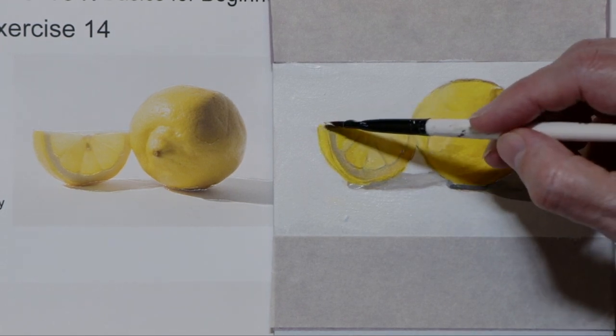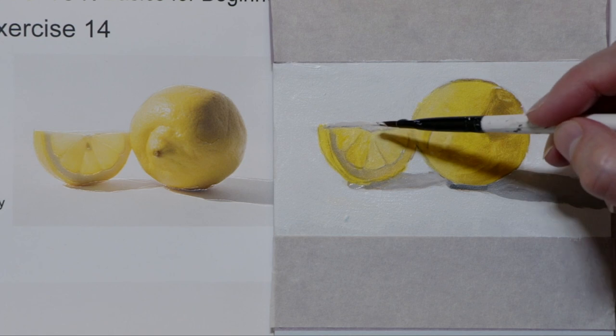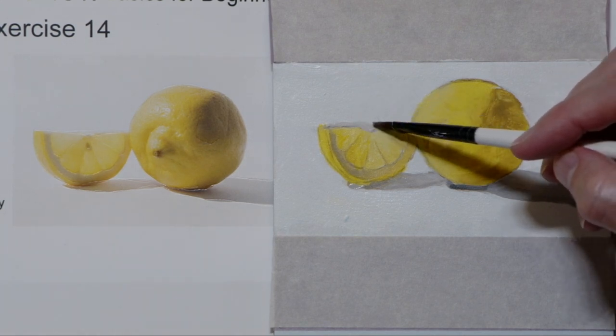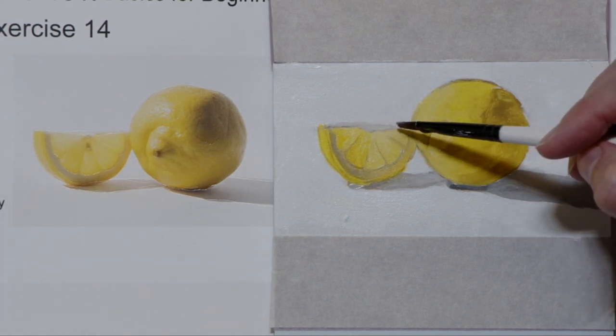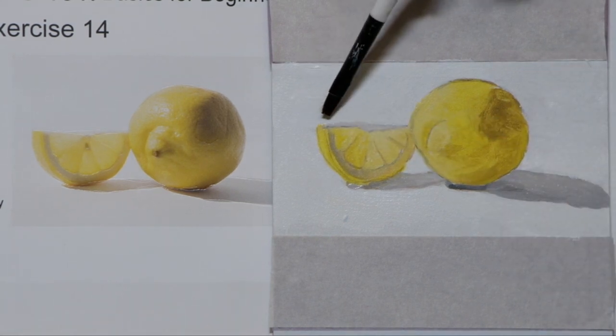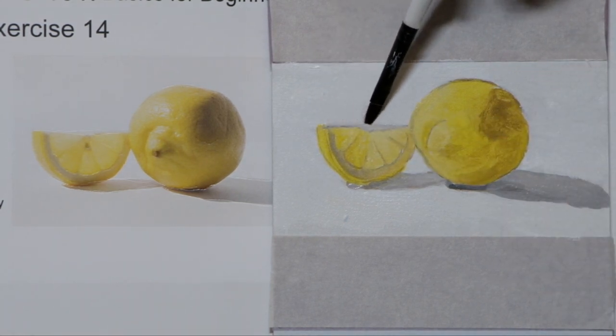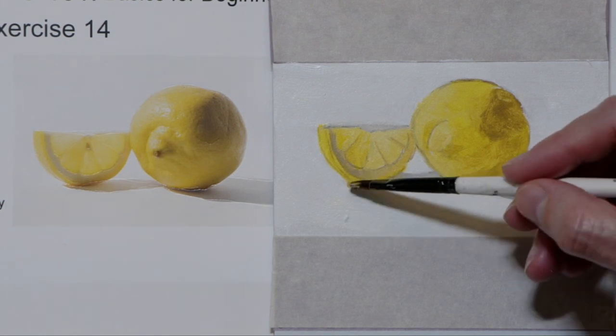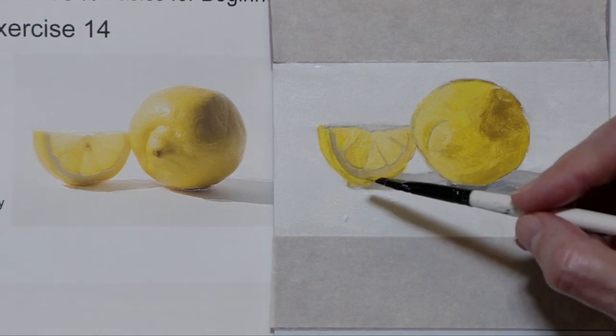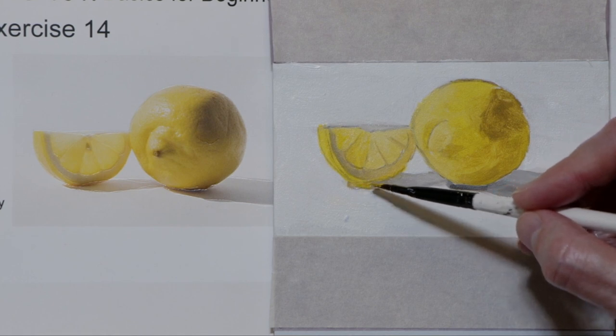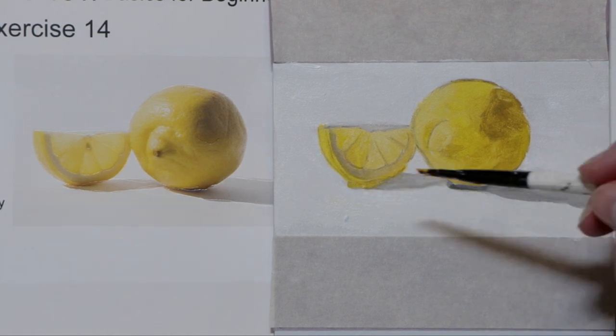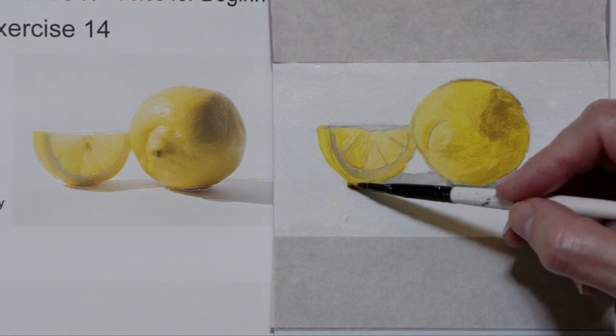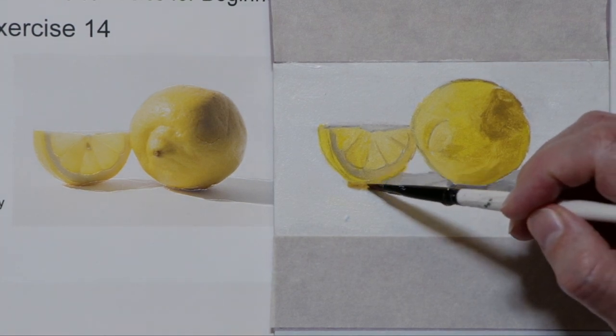And across the top again. Flip the brush around. Get paint from the other side. Clean the edge up. There is a little sort of glow of an orange yellow that's just underneath right there. And it's kind of fun to put it in place.